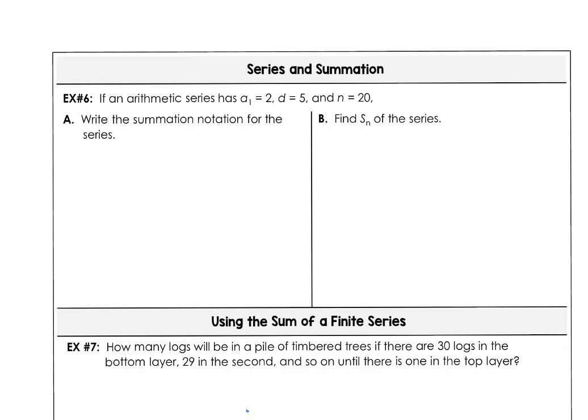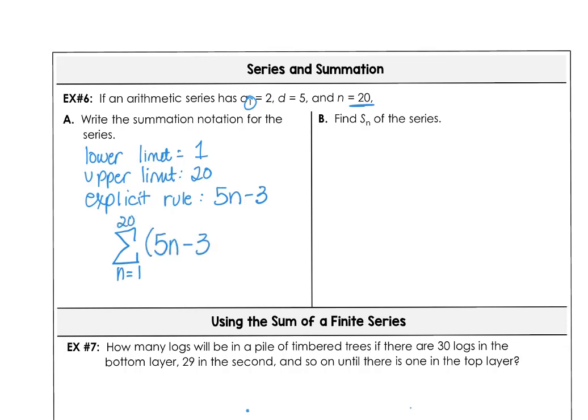Example 6 says if an arithmetic series has the first term is 2, the difference is 5, and the number of terms is 20, write the summation notation for the series. Our lower limit is 1 and our upper limit is 20, because they've given us the first 20 terms. Our explicit rule is going to be 5 times n. If 2 is the first term and we take off 5 from that, that's negative 3. So 5 times n minus 3 is our explicit rule. The summation notation starts at the first term, stops at the 20th term, and our rule is 5n minus 3.